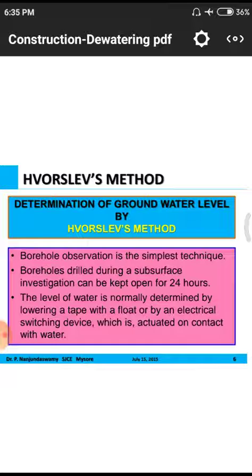To find the groundwater level, we use the Hvorslev method, which involves borehole observation. Boreholes are drilled from the ground surface and kept open for 24 hours. A particular length of borehole is drilled and observed for 24 hours — if water is not found, they drill further. This process of observing and drilling continues until water is found, which may be at 100, 150, or 200 feet depending on the percolation capacity of the soil.